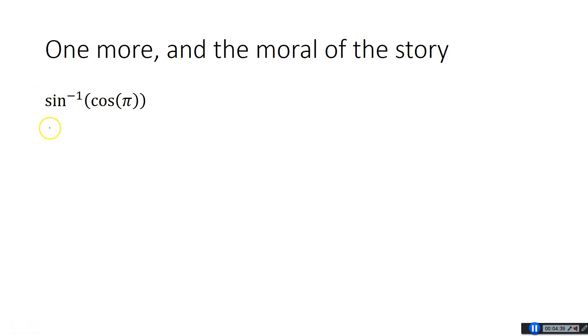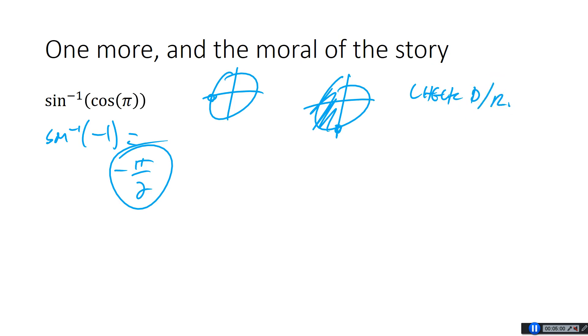We got one more here and the moral of the story. Sine inverse of cosine of π. So sine inverse of cosine of π, that's on the left side. That's negative 1. So sine is negative 1 down at the bottom here, that's negative π over 2. So again, the moral of the story, just work from the inside out. Just make sure that you're checking your domain. Check domain and range. Just make sure that you're getting things in the right spot of the circle where they have to be.